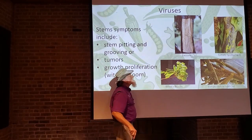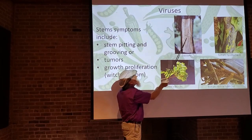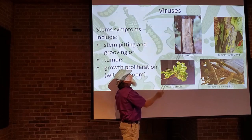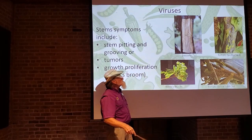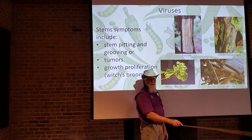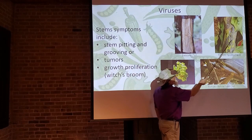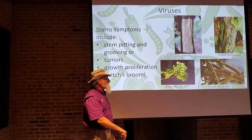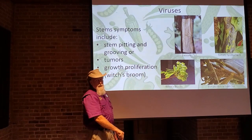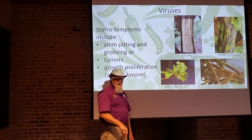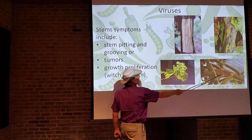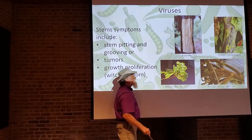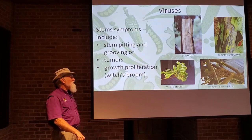Exocortis virus, which infects citrus, produces pits on the inner side just below the bark on the trunk. Tomato spotted wilt virus can form cankers on the stem of the tomato. Tomato yellow leaf curl virus, which we saw causing the leaves to cup up and curl, can also cause gall formations on the stems — little tiny wart-like bumps on the stem of the tomato.